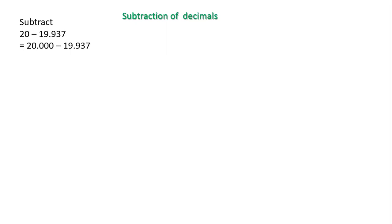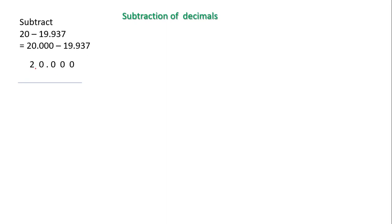Namaste students. In this video we will see subtraction of decimals. Here is a problem: subtract 20 minus 19.937. As you can see, the first number is a whole number and the second number is a decimal number, which means these two are unlike decimals. I will convert the first number to three decimal places to make them like decimals. After converting, 20 becomes 20.000 minus 19.937.